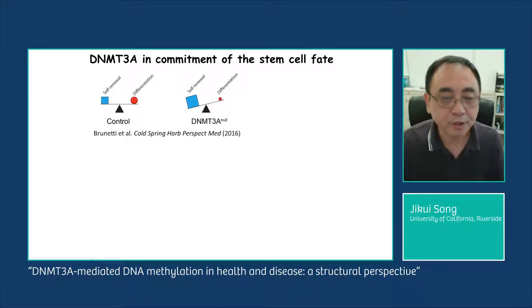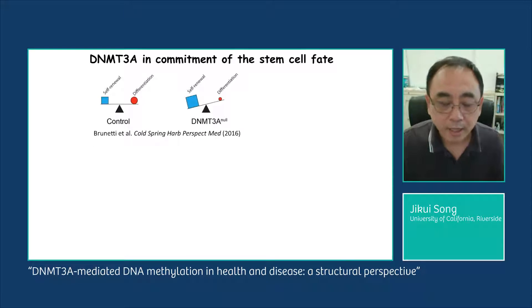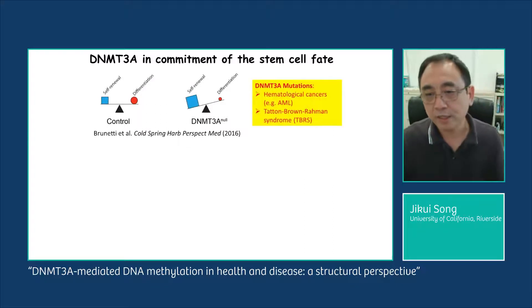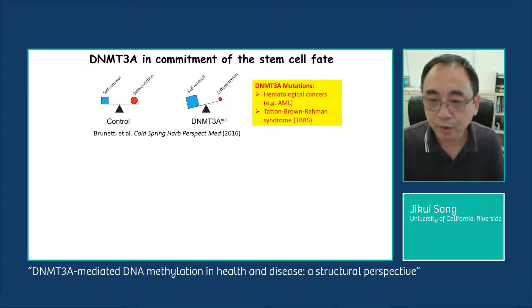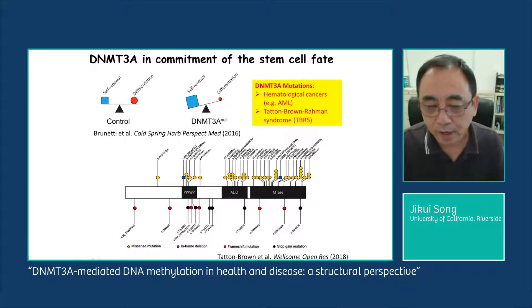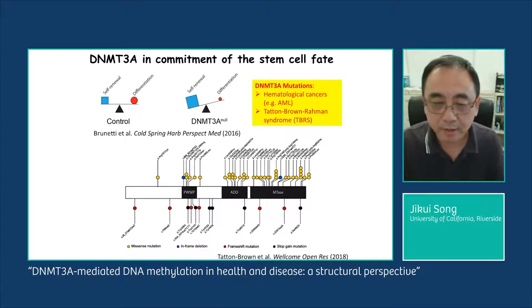For DNMT3A, it has been shown that it plays a critical role in determining the fate of stem cells. Knockout of DNMT3A in blood stem cells has been shown to shift the balance between self-renewal and differentiation toward self-renewal. With this critical role, it is no surprise that mutation of DNMT3A has been associated with a number of human diseases, including hematological cancers such as acute myeloid leukemia and Tatton-Brown-Rahman syndrome. In TBRS, mutations of DNMT3A have been mapped to the functional domains of DNMT3A, suggesting a link between DNMT3A-mediated methylation and disease progression.